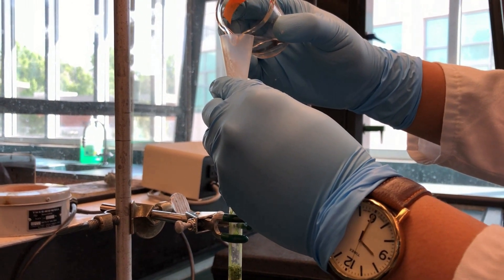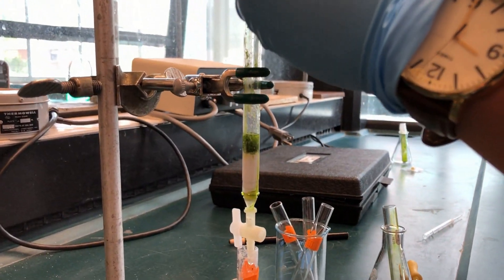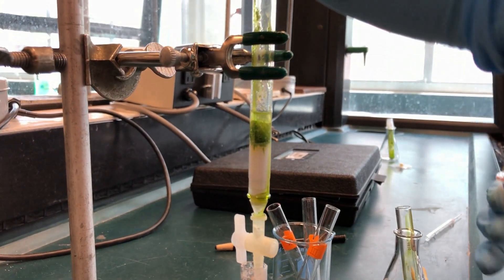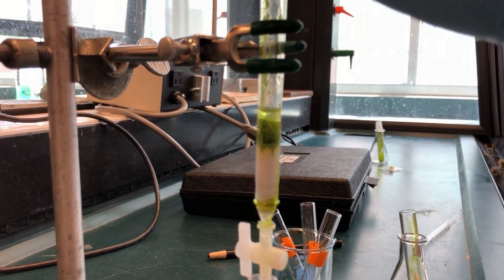If the yellow band begins to separate from the green band, continue to add petroleum ether until the yellow band gets near the bottom of the column and then collect it in test tube 2.